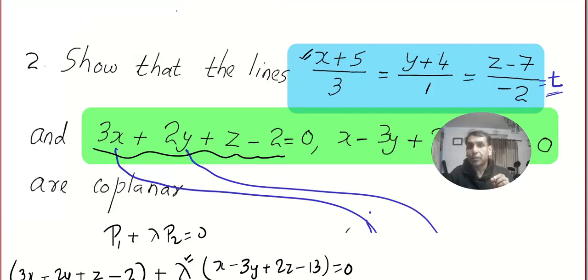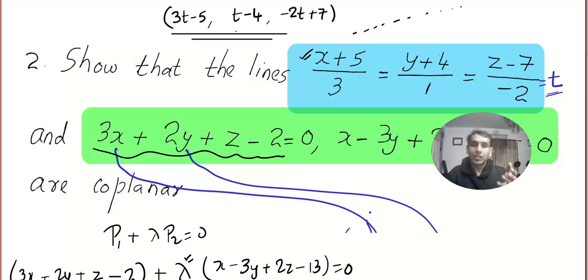Do you remember the parametric form? The parametric form is 3t - 5, t - 4, and -2t + 7. And parametric form gives you all the points in a line. So you can plug in t = 0 or t = 10, you can plug in t = -7. Get one point from line 1.